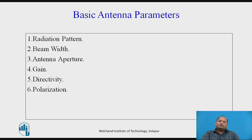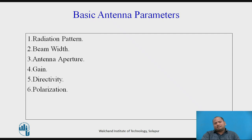Directivity of an antenna is the property that describes how directional the radiation pattern is — in what direction the radiation pattern is largest, or the beam width with respect to a particular direction. Directivity is also measured in decibels.